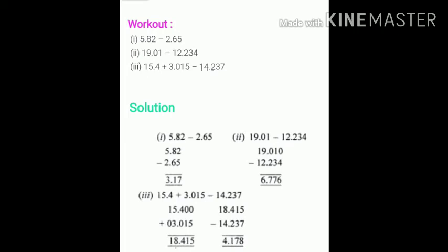So the number becomes 15.400 plus 03.015 gives 18.415 minus 14.237. So finally we get the answer as 4.178.